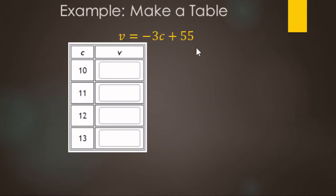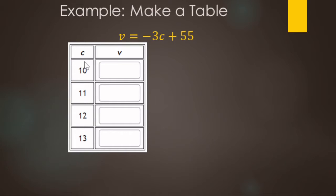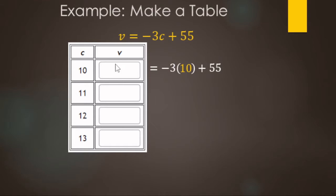Now we're going to take our equation and fill out a table. The table has number of cakes — 10, 11, 12, and 13 — and vegetable oil remaining for each. We substitute each C value into the equation. For 10 cakes: negative 3 times 10 is negative 30, plus 55 gives 25.